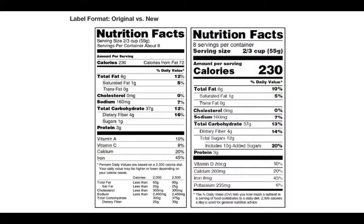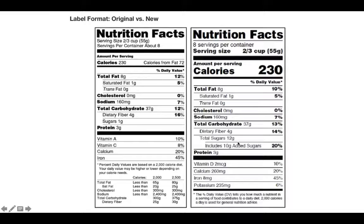Here is the old food label on the left and the new food label on the right, side by side. Take a moment to look over them and identify some differences. One of the biggest things you can see is that the calories are big and bold, and the serving size is big and bold. You might also notice that they now include added sugars on the new label.